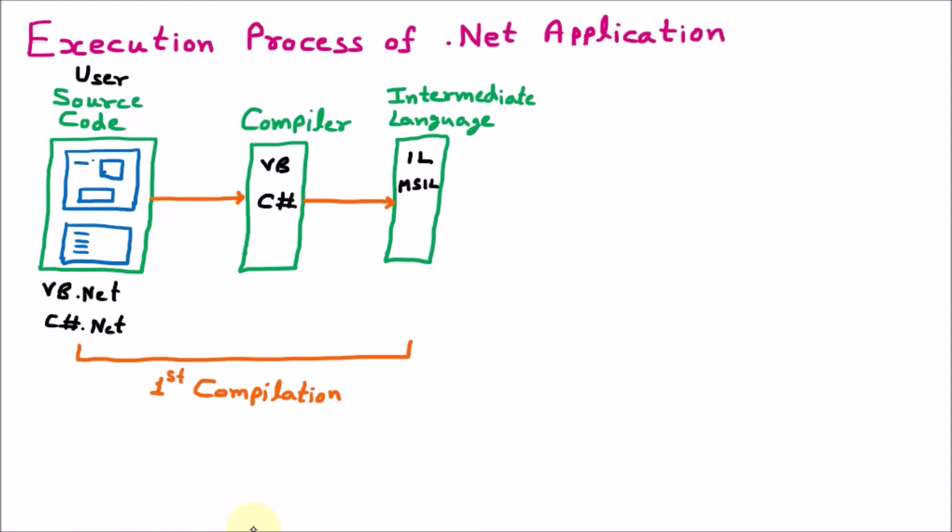There are various names for this intermediate language — IL, MSIL, Common Intermediate Language (CIL), or managed code. Whenever we convert the source code to the intermediate language, it is very secure and nobody can understand it. This is called managed code. There is also the concept of unmanaged code, where source code is converted directly to machine code in one step, like in C language or VB language. But in .NET, it works on managed code.